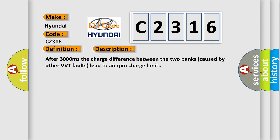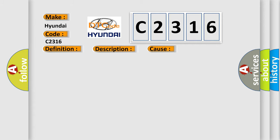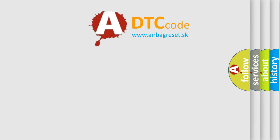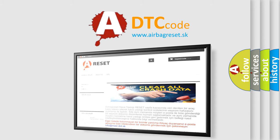Here is a short description of this DTC code: after 3000 milliseconds, the charge difference between the two banks caused by other VVT faults leads to an RPM and charge limit. This diagnostic error occurs most often in these cases. Resolve the primary fault first.